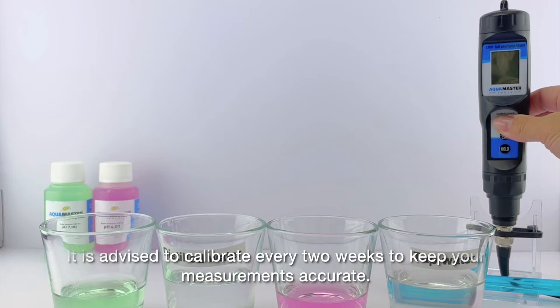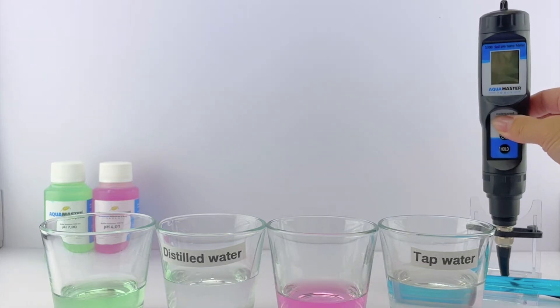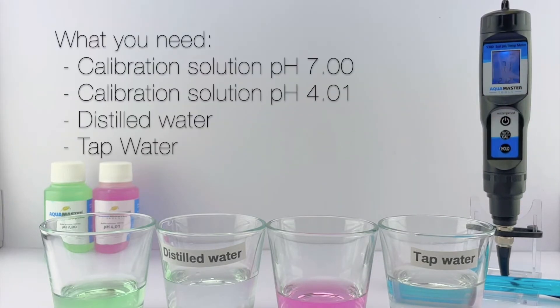It is advised to calibrate every two weeks to keep your measurements accurate. What you will need: calibration solution pH 7, calibration solution pH 4.01, distilled water, and tap water.